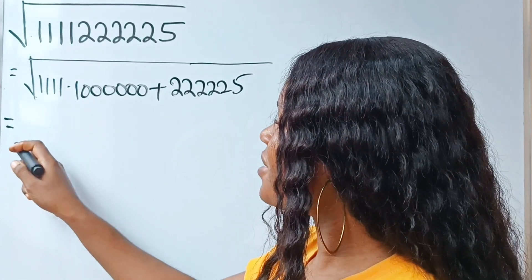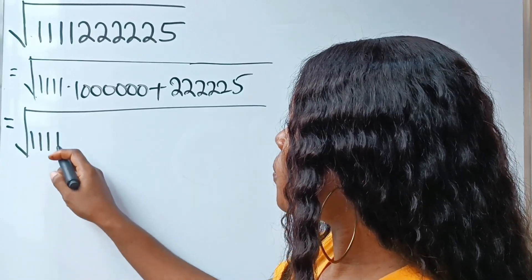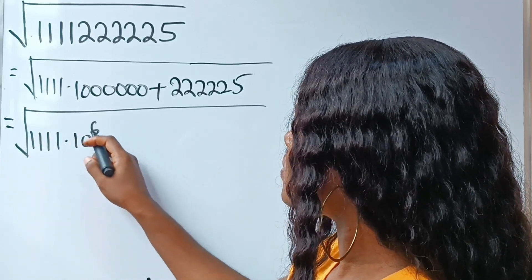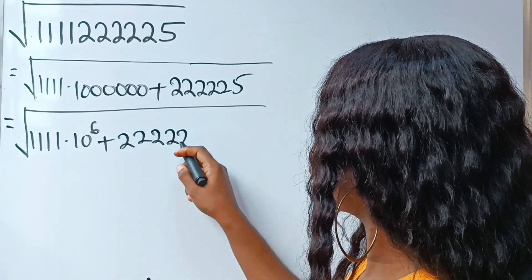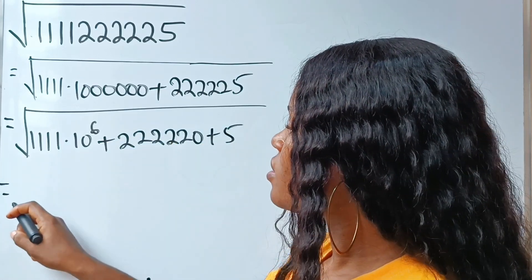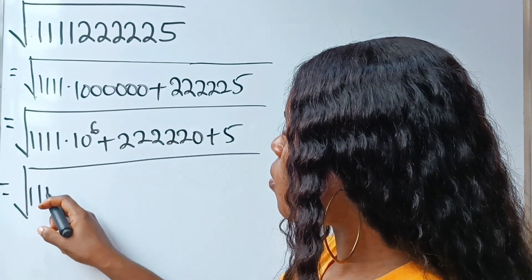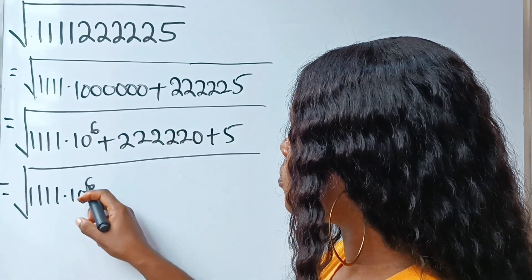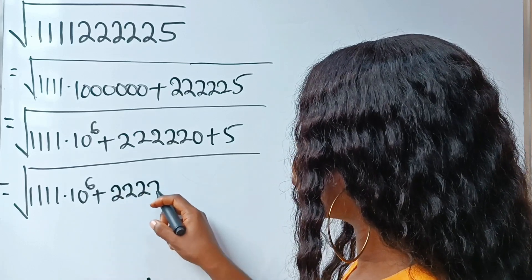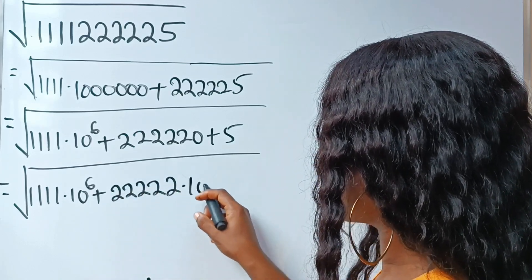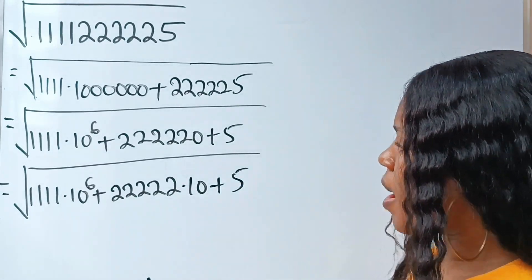Perfect. Now, this is equal to square root of 1,111 multiplied by 10 to the power of 6, plus 2,222,220 plus 5. Okay? So we continue — this is the same thing as square root of 1,111 multiplied by 10 to the power of 6, plus 22,222 multiplied by 10, plus 5. All right.